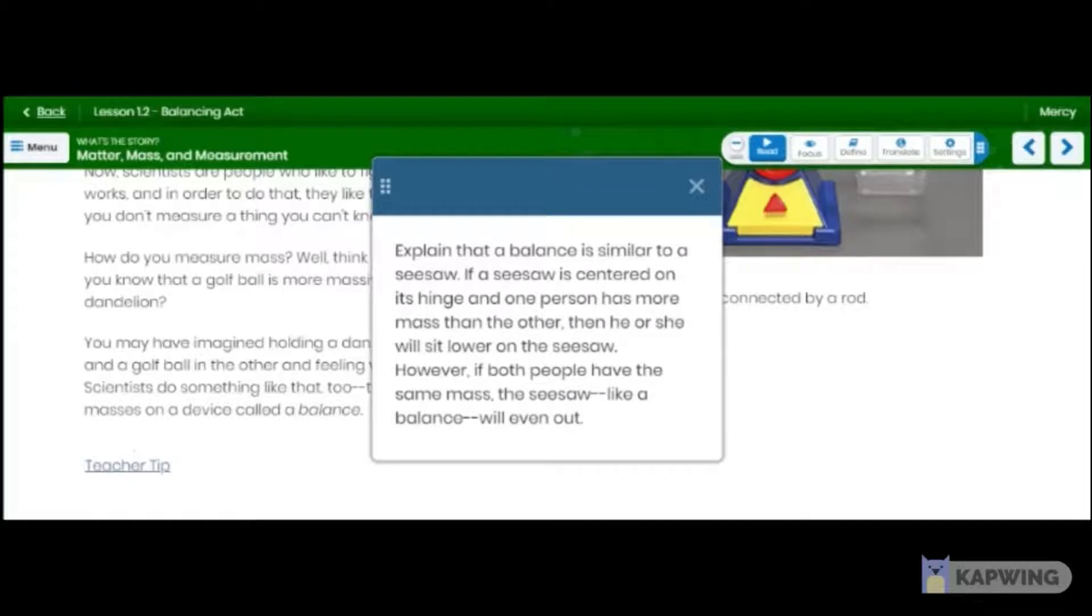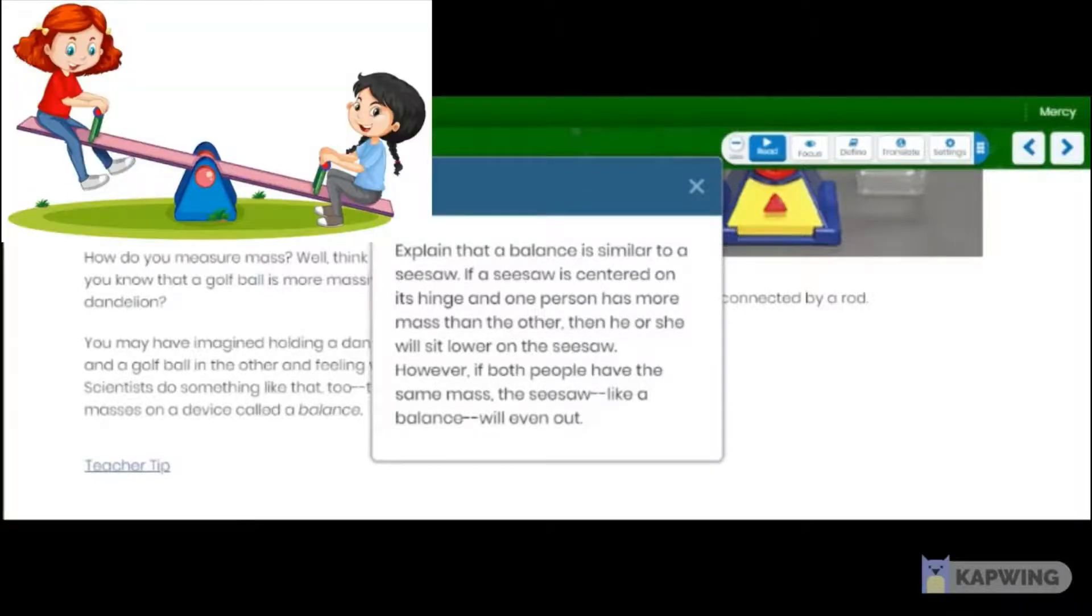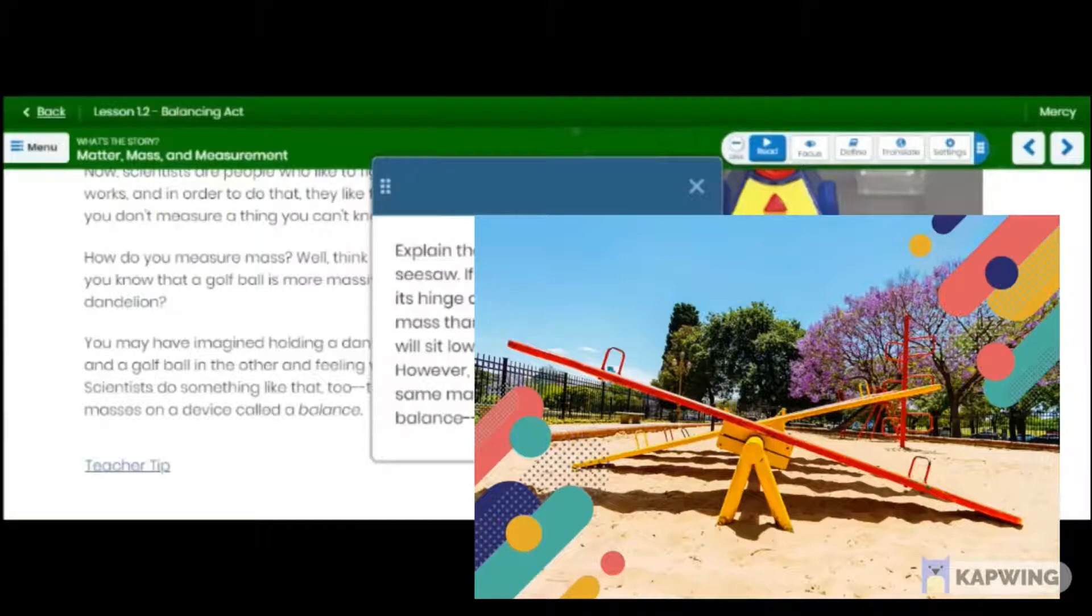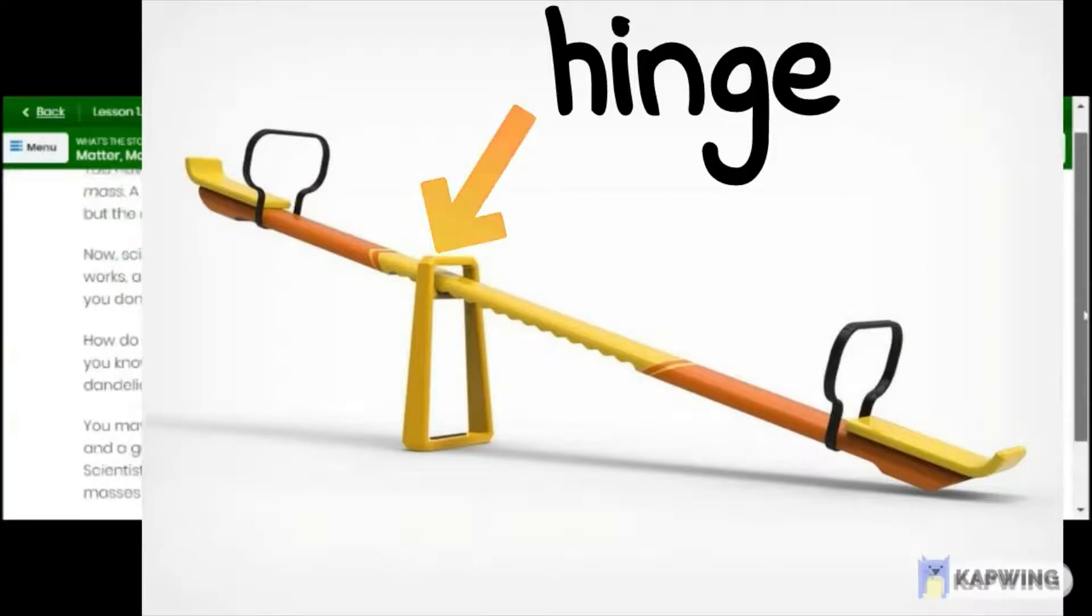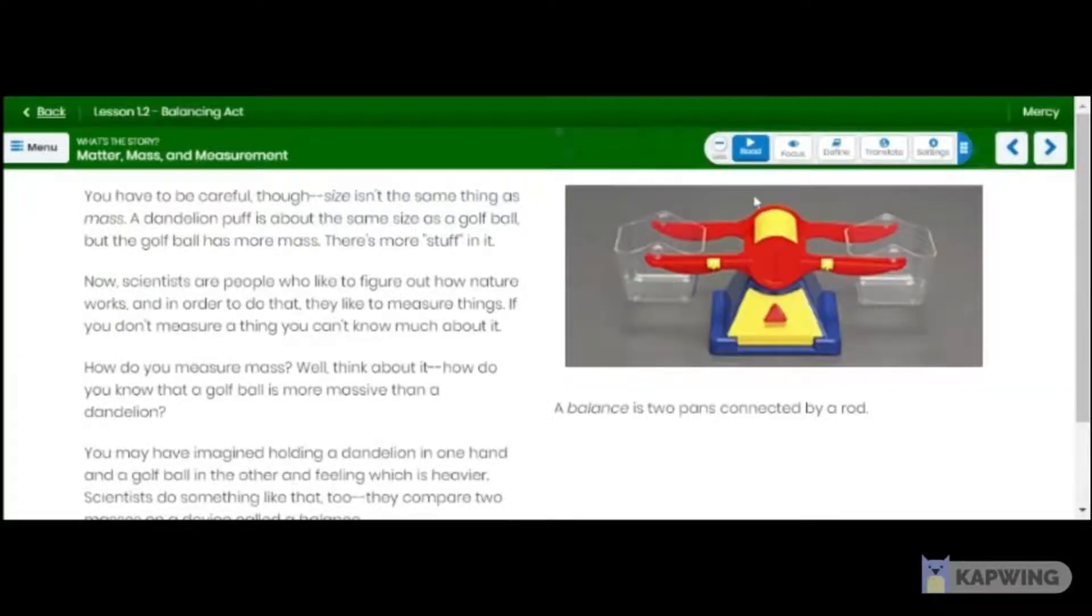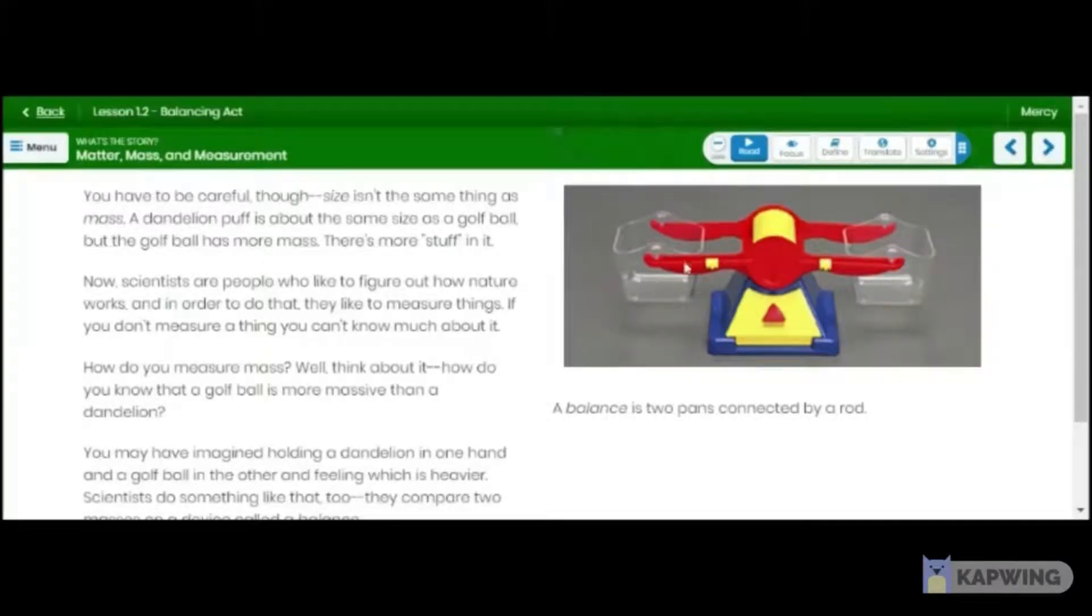A balance is similar to a seesaw. Have you ever been on a seesaw before? No. Okay, we're going to have to find a seesaw somewhere in a park. If a seesaw is centered on its hinge, so this is its hinge right here on the balance, and one person has more mass than the other, then he or she will sit lower on the seesaw. However, if both people have the same mass, the seesaw, like the balance, will even out. So when both of the pans have objects that weigh the same, they're balanced. They're nice and straight like this horizontal. But if one object in this pan is heavier than this pan would be lower down, and this pan would be higher up.